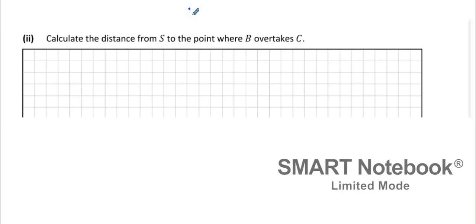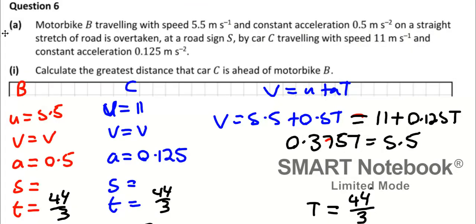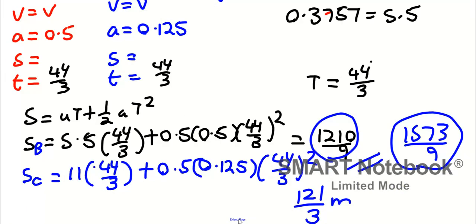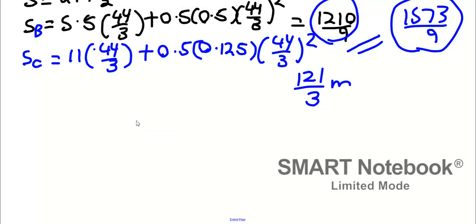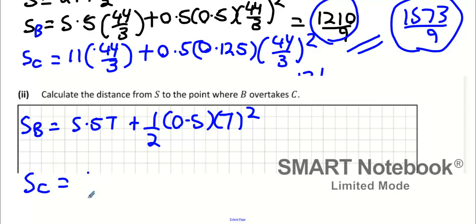From S to the point where B overtakes C, what do we know in this scenario? Distance covered by B equals distance covered by C. We can use some of the knowledge we had in the last question to do this. SB is 5.5 times T plus a half times 0.5 T squared.